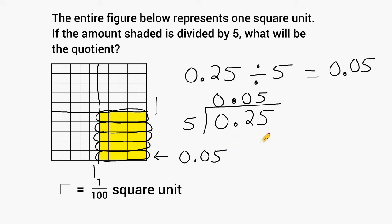So really, the key to solve this problem was to determine what is the value of this yellow portion that is shaded. Once you have determined that it was 25 hundredths, you just had to divide that into 5 equal groups to come up with a quotient of 5 hundredths.